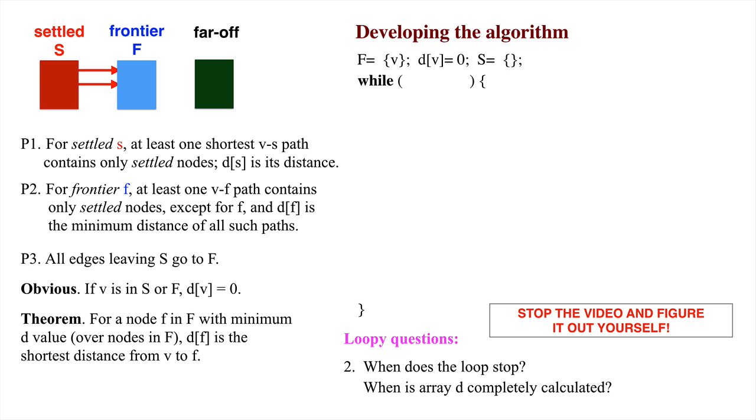By p1, upon termination, all reachable nodes should be in the settled set. By p2 and p3, this will be the case when the frontier is empty. For if the frontier is empty, v is in the settled set.